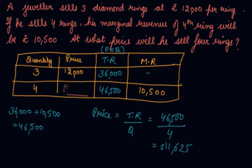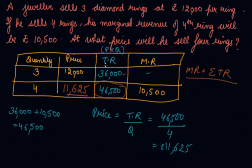The price for 4 units comes out to 11,625. So you have calculated the price which is 11,625. MR is the summation approach to TR — you keep adding MR to TR to get the consecutive next value. We used the formula TR = price into quantity, so price = TR divided by quantity. This is how we solved this question.